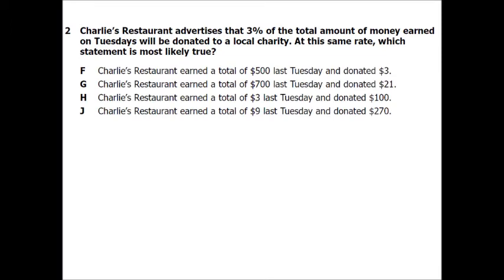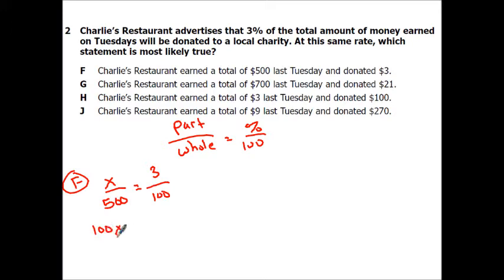Number 2 says, Charlie's Restaurant advertised that 3% of the total amount of money earned on Tuesdays will be donated to a local charity. At this same rate, which statement is most likely true. So you're going to have 3% of whatever this number is, using part over a whole equals percent over 100. For F, Charlie's Restaurant earned a total of 500, so the whole was 500. We don't know the part, and since we were talking about 3%, we're going to put the 3 here over 100. So this is going to be 100x equals 1,500 divided by 100, so x would equal 15. So my part would be 15, so that's not right because they said 3.